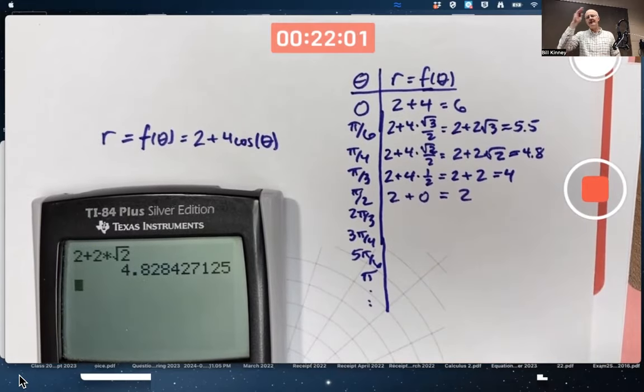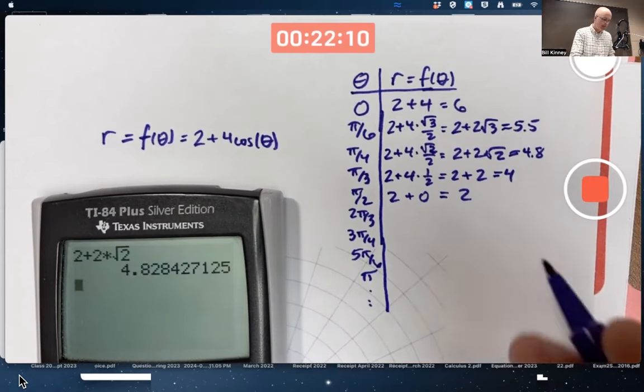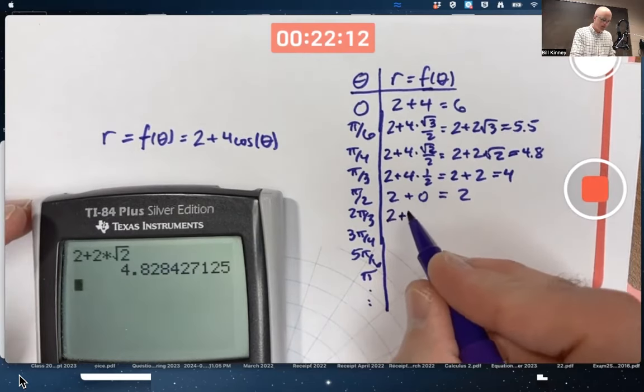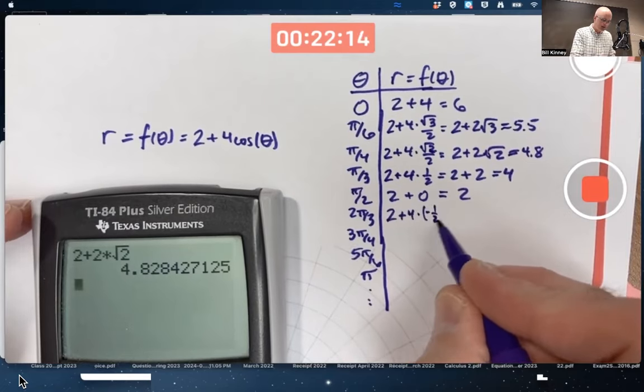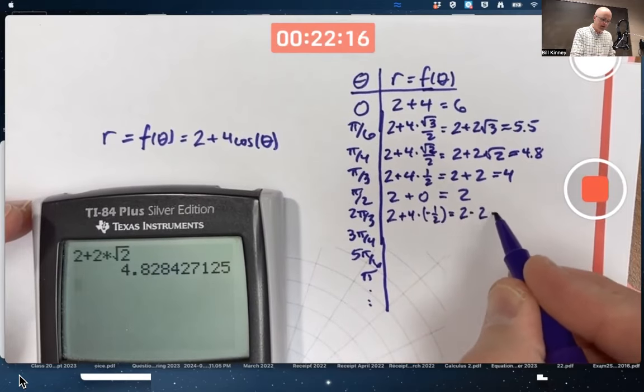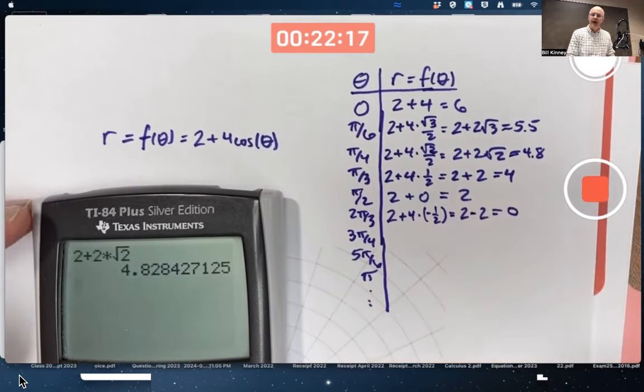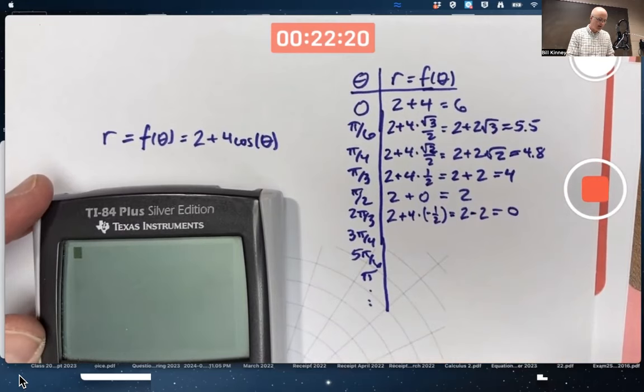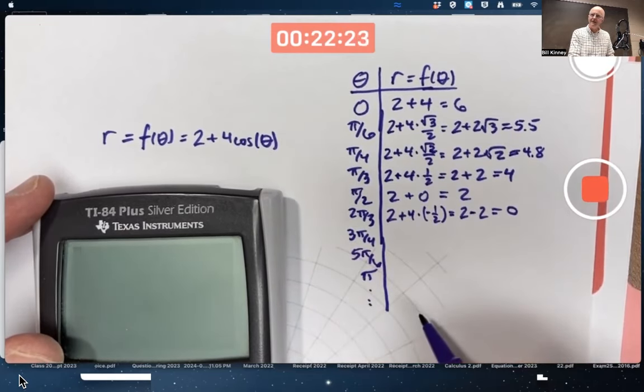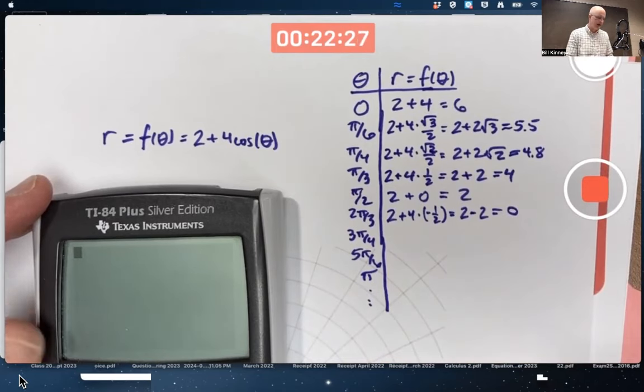2 pi over 3, that's 120 degrees. Cosine is the first coordinate. We're into negative first coordinates. Negative 1 half. 2 plus 4 times negative 1 half. 2 minus 2 is 0. Interesting. And yeah, if we keep going here, we're going to get some negative r values. How can the distance to the origin be negative? Hang with me here.